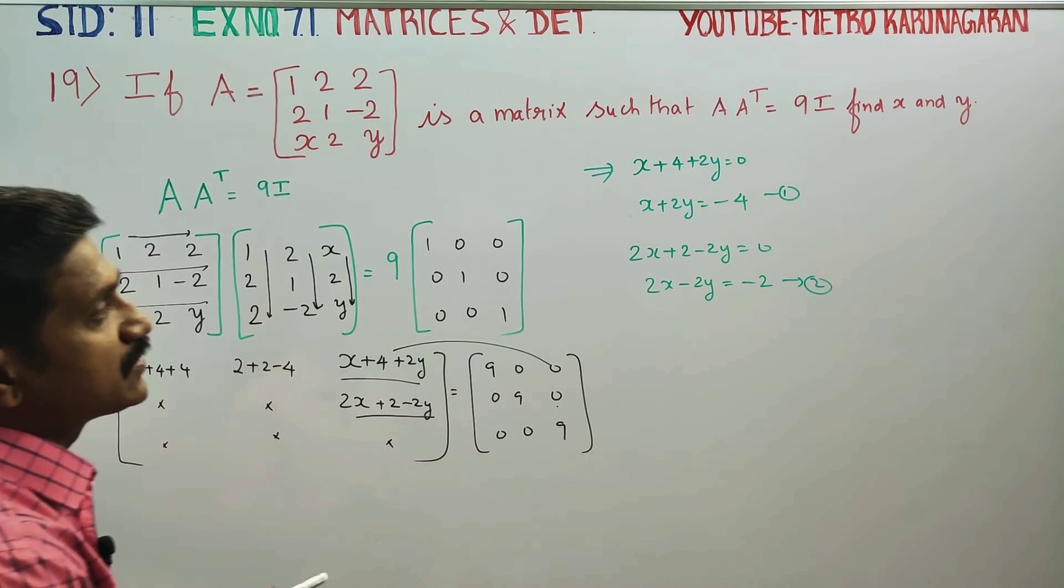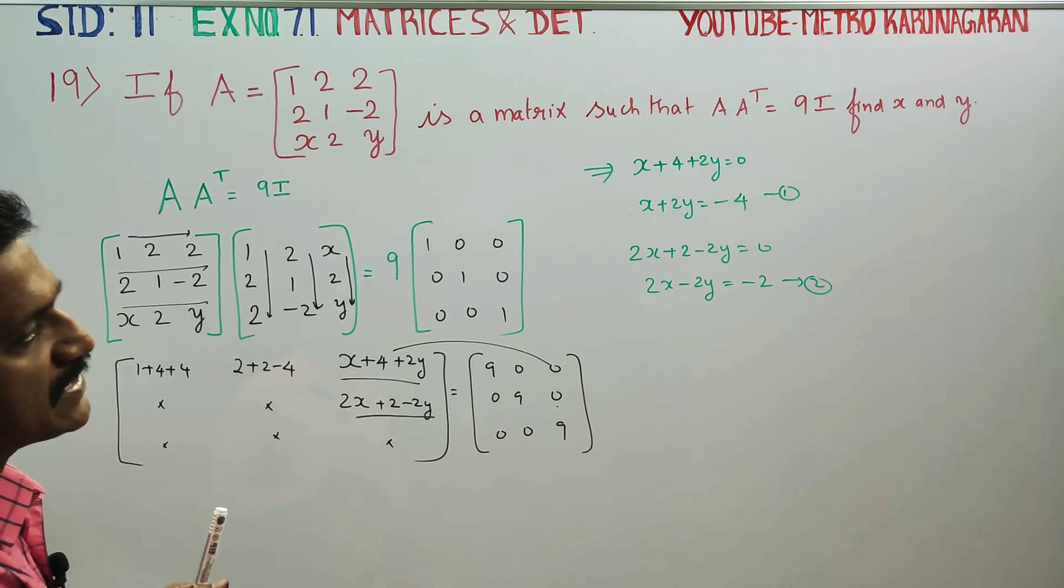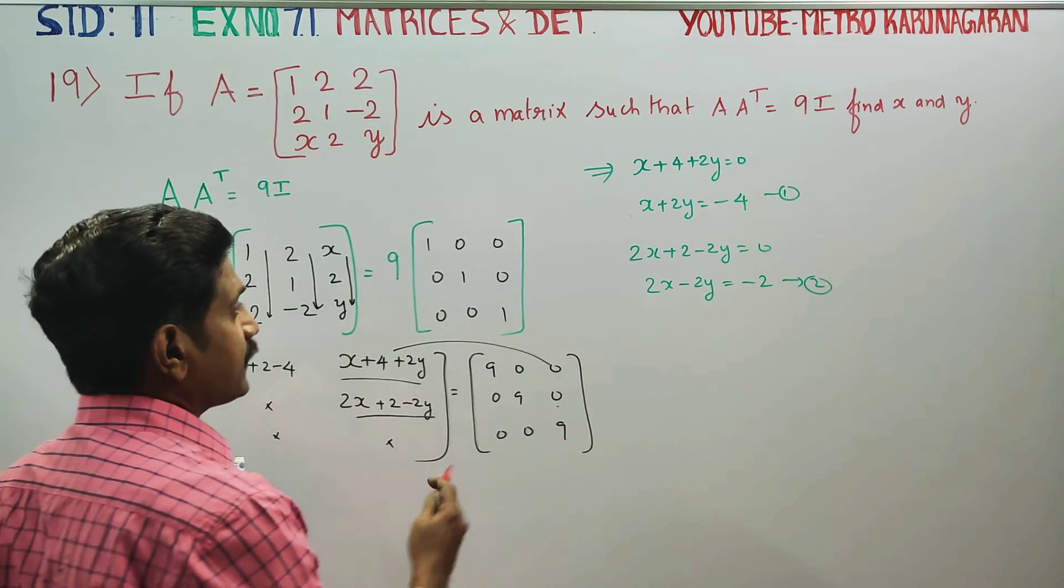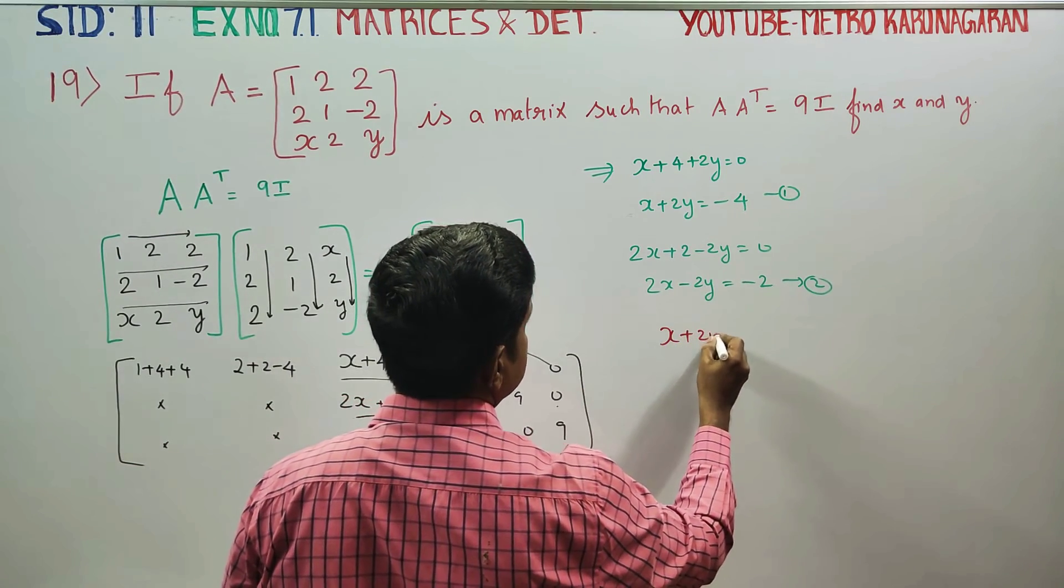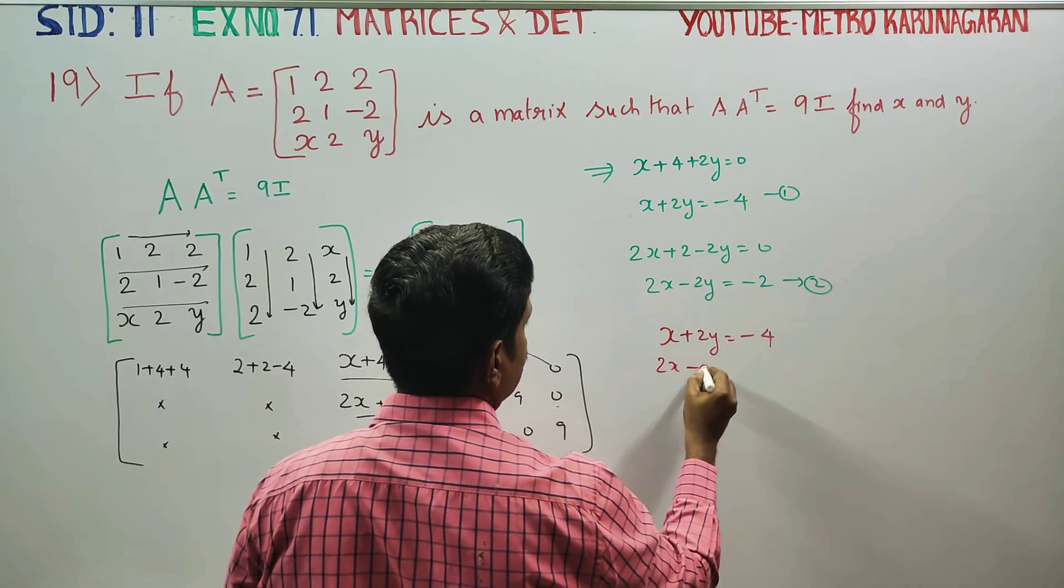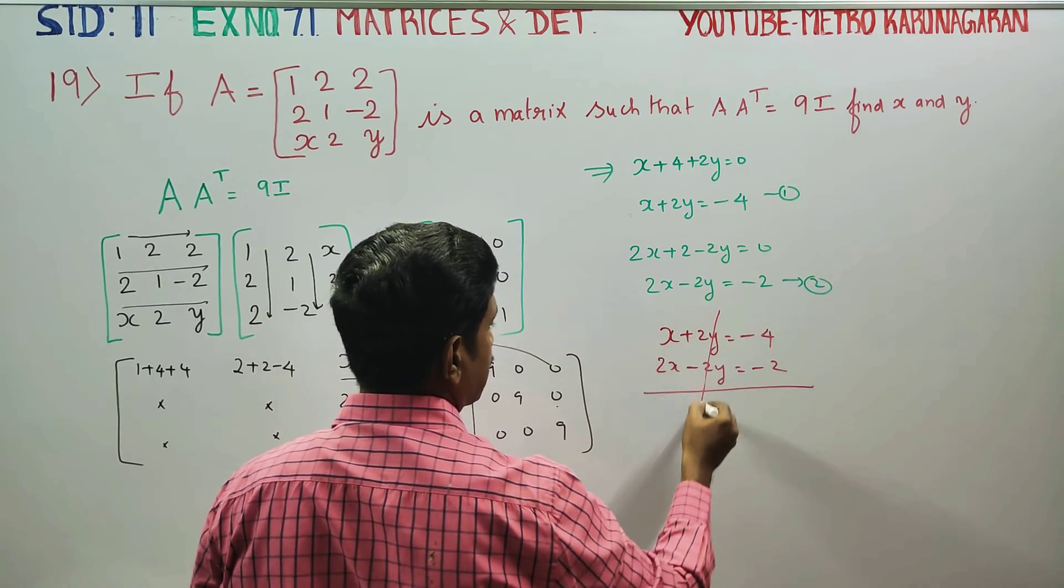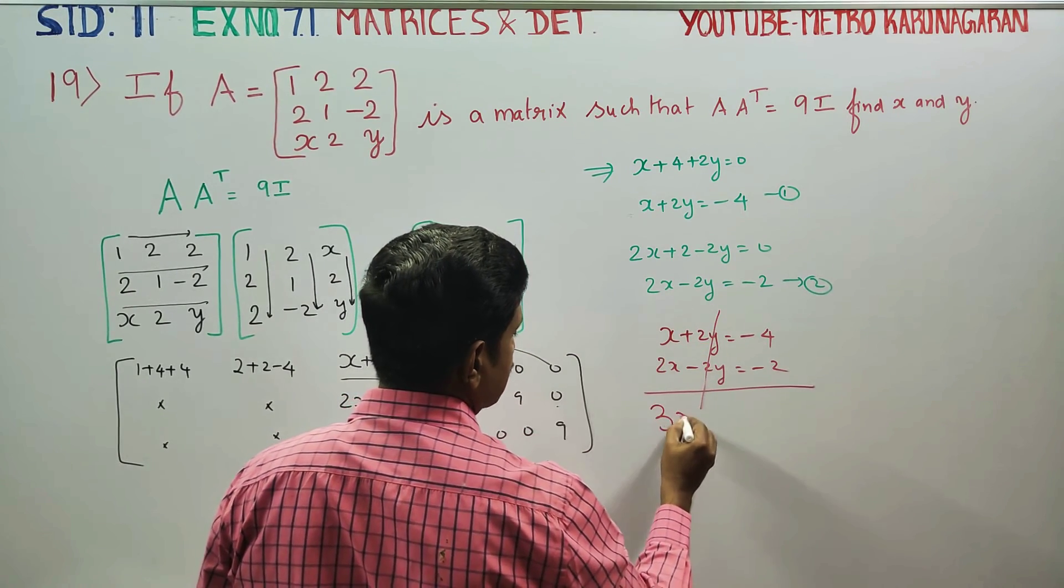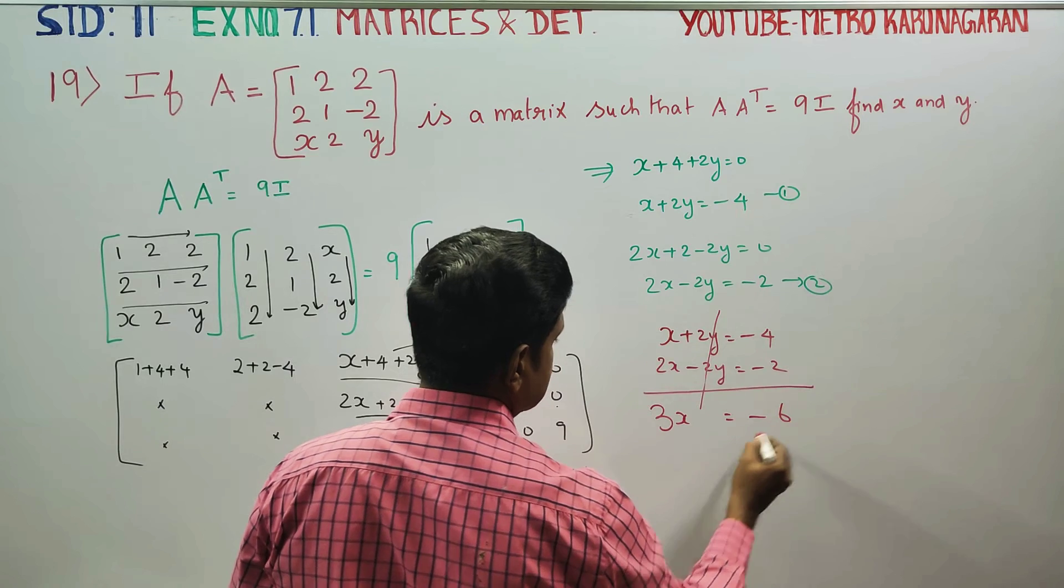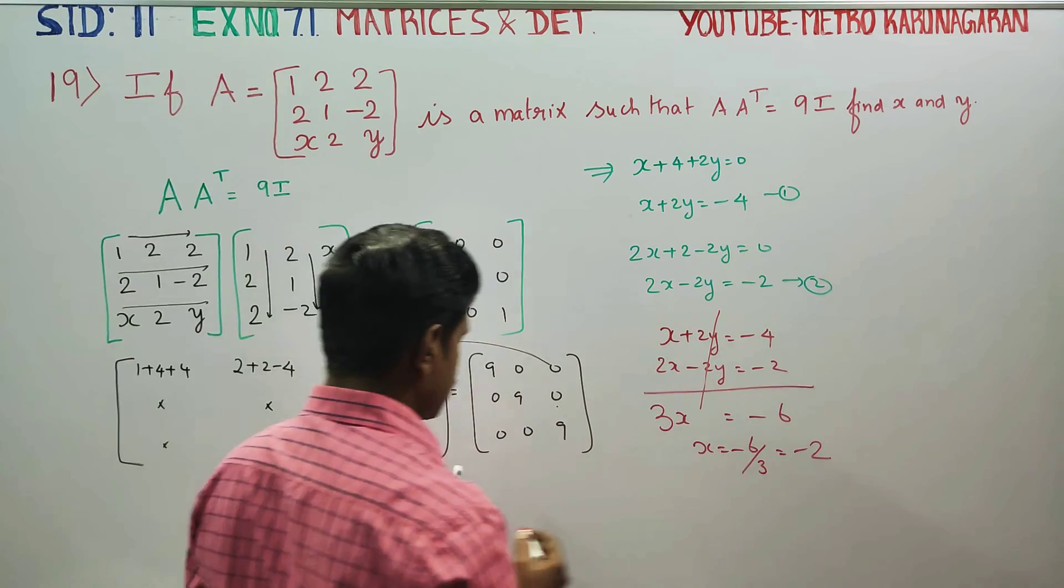I have solved the equation. First equation is x plus 2y is equal to minus 4. Second equation is 2x minus 2y is equal to minus 2. I have solved the equation. The answer is minus 2.